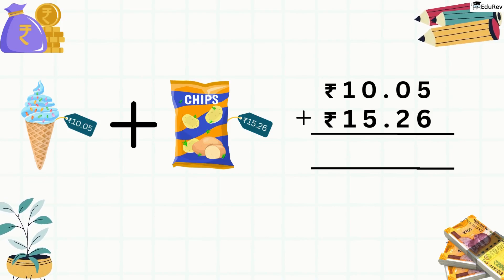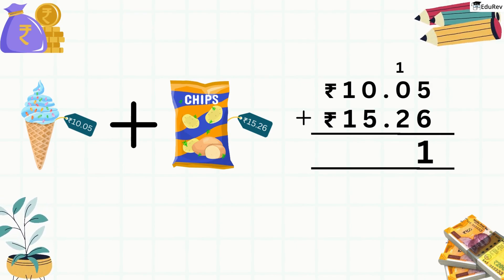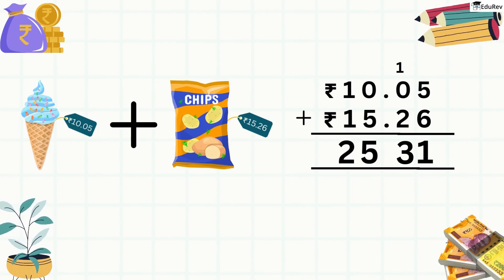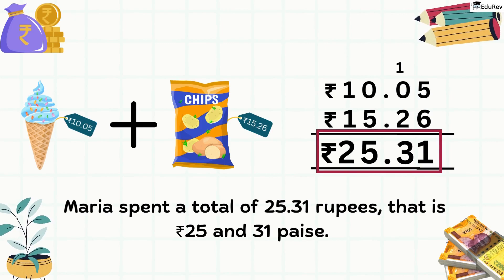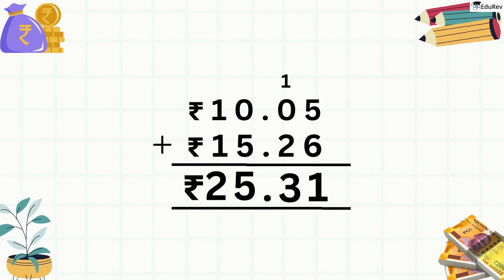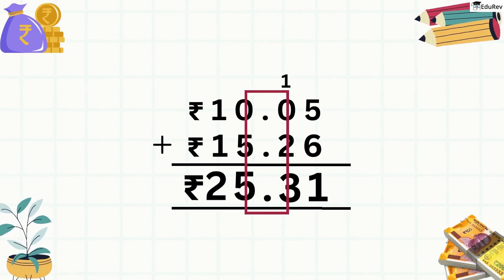To add: 6 and 5 is 11, so we write 1 here and carry over 1 to the next position. 0 plus 2 plus carried over 1 is 3. Next, we add 5 and 0 which equals 5. Finally, 1 plus 1 is 2. So the answer is 25.31 rupees — Maria spent a total of 25 rupees and 31 paise. Always remember that in addition, we write one amount under the other such that the point is exactly under the point, and add as ordinary numbers.